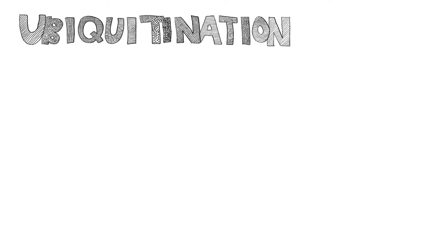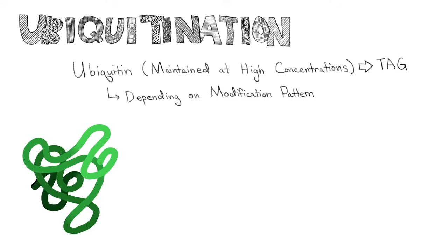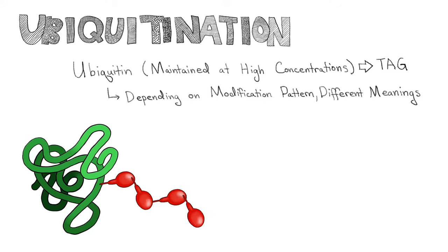Let's look at how ubiquitination works. A small protein called ubiquitin, which cells maintain at high concentrations, serves as a tag. Depending on the modification pattern of the ubiquitin, there can be different meanings. In this case, the tag is saying, 'KILL ME!'